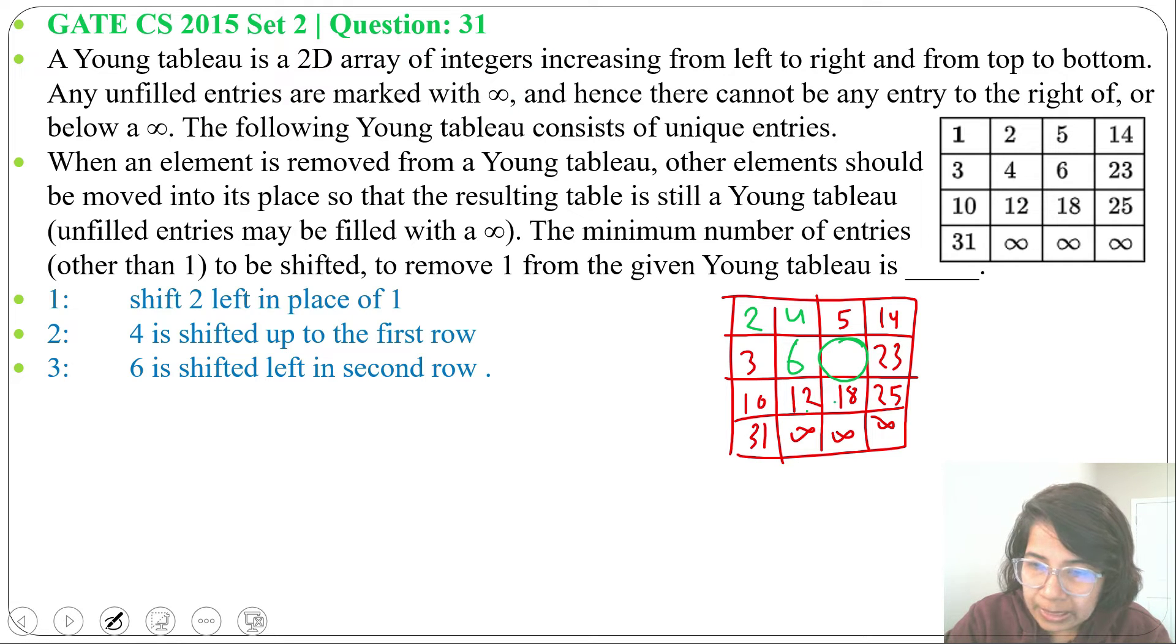We can move this 18 up. So after moving 18 up, it will be 3, 6, 18, 23, still in increasing order. Now this space is blank, so we can move 25.